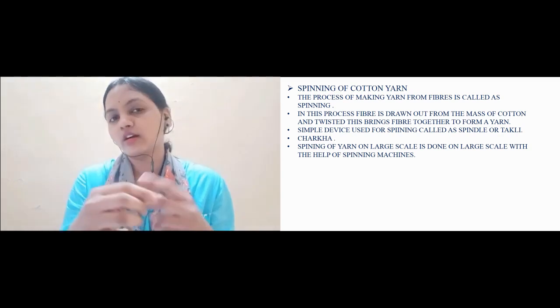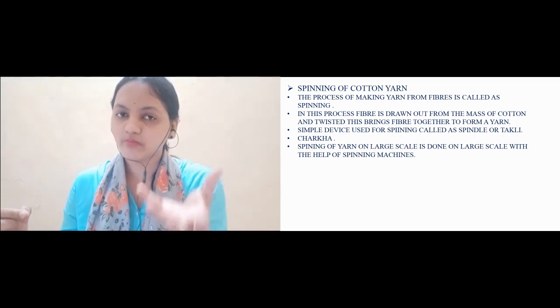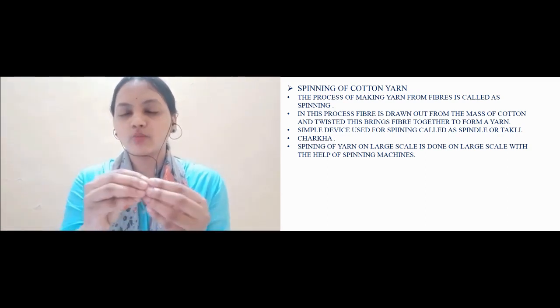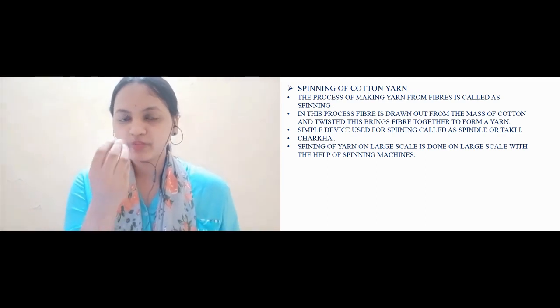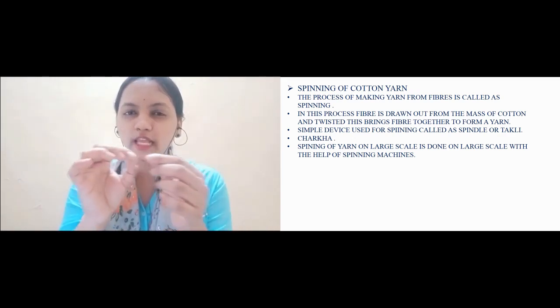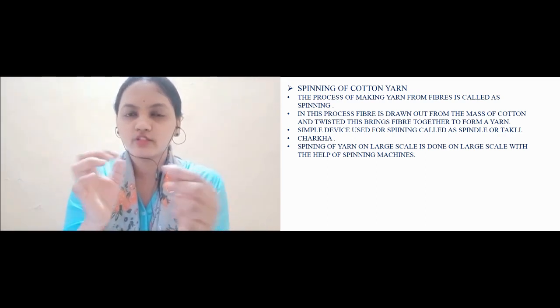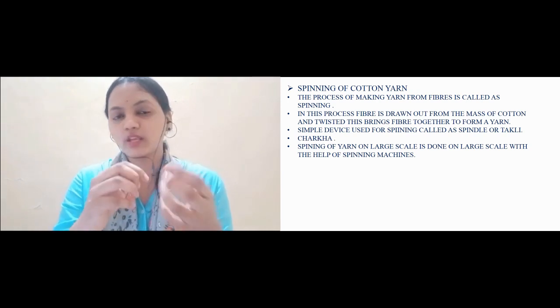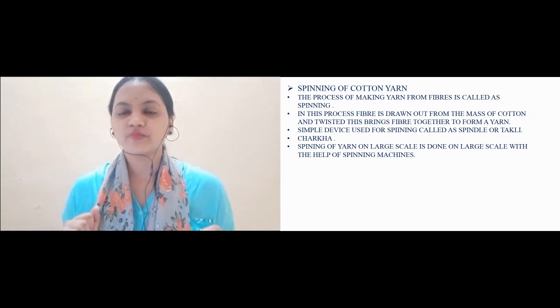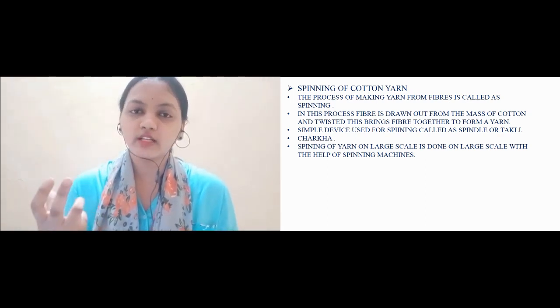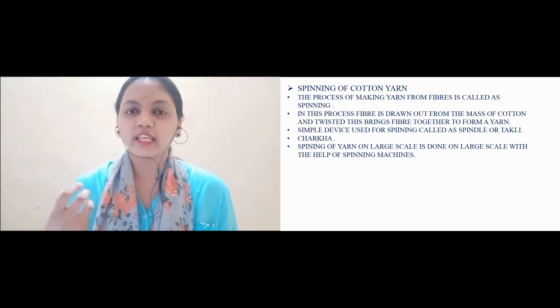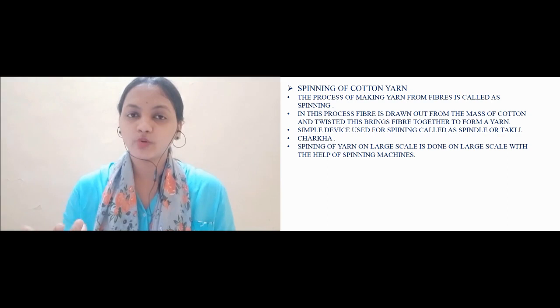In this way, a yarn is made out of a mass of fibers of cotton. If you take one piece of cotton fiber yarn, you will see that there are millions of tiny fibers, thread-like structures. A mass of cotton is taken, it is pulled out, and then it is twisted with the help of a needle spindle. We call it takli.